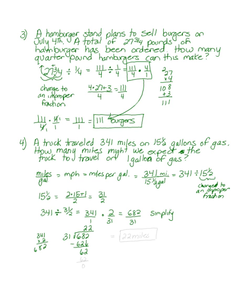Now thirty-one into sixty-two, it goes in twice evenly. And I'm left with my final answer of twenty-two miles. So I can expect to travel twenty-two miles per one gallon of gas.